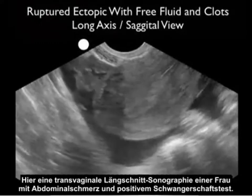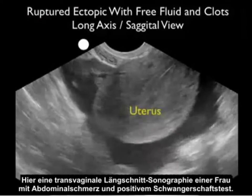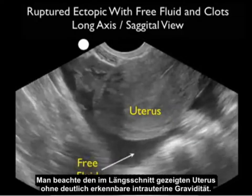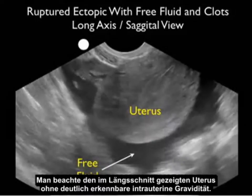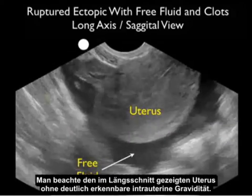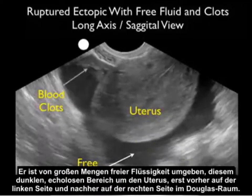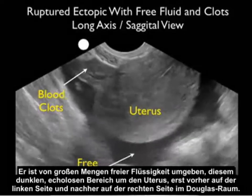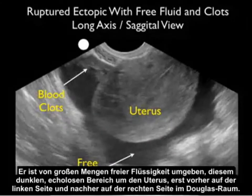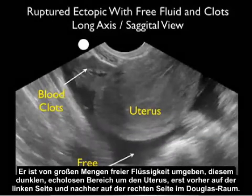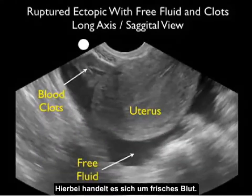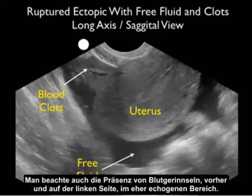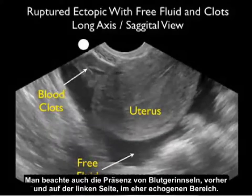Here's a transvaginal long axis ultrasound from a woman who presented with lower abdominal pain and a positive pregnancy test. Notice the uterus in the long axis view without an appreciable intrauterine pregnancy, surrounded by a large amount of free fluid — that dark or anechoic area surrounding the uterus both anteriorly to the left and posteriorly in the cul-de-sac to the right. That is the presence of fresh blood. Notice also the presence of blood clots anteriorly, that more echogenic area.